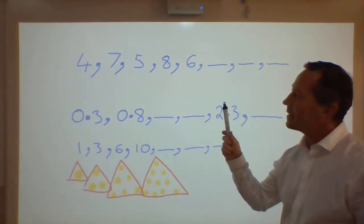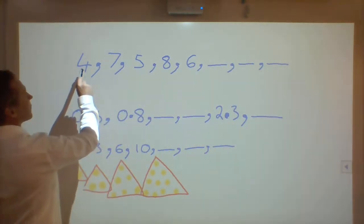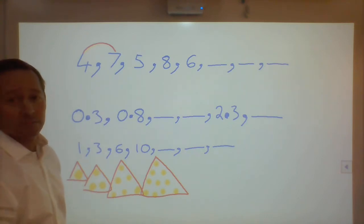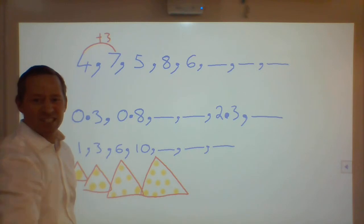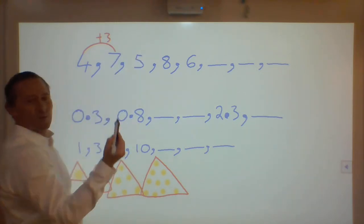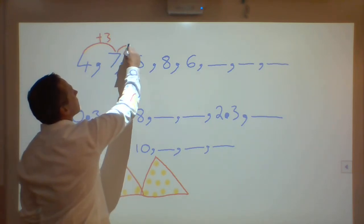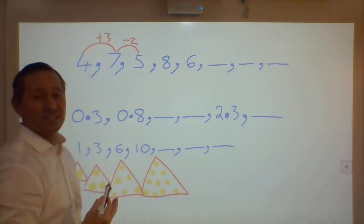Again, we're looking at patterns here. To continue, we start at 4, jump of 3, plus 3. It'll be easy, plus 3, 7. Come backwards, 7 to 5, minus 2.